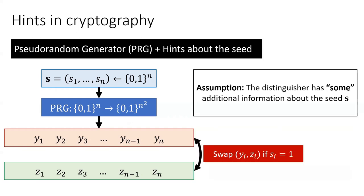But what if the distinguisher did have some information about the seed? For example, what if we take the output of the PRG, which in this case is a sequence of n strings y1 through yn, and a sequence of uniformly random strings z1 through zn, and then for each position from 1 through n, we swap yi and zi if the bit si is equal to 1.